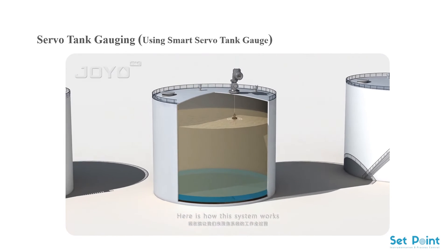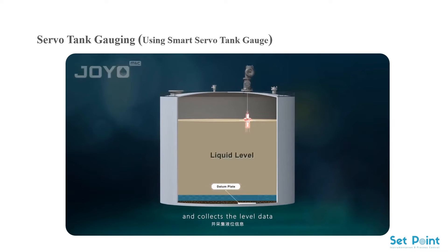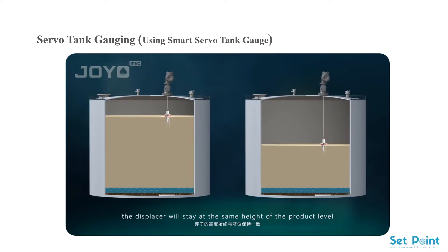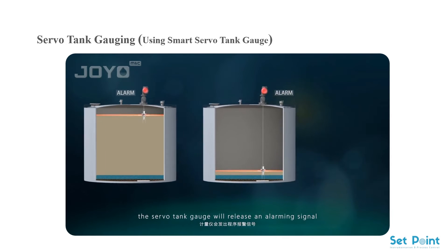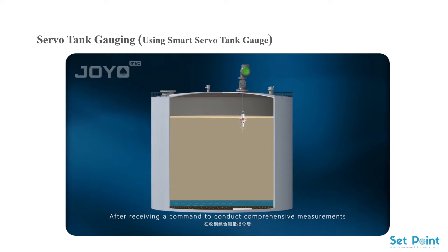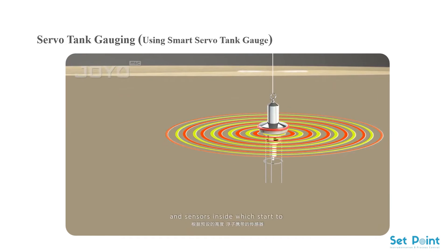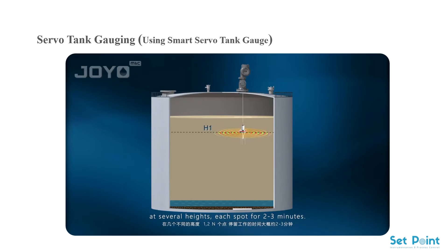Here is how the system works. Usually the displacer stays on the surface of the product and collects level data. When the product level goes up or down, the displacer stays at the same height as the product level. When the product level reaches its high or low limit, the servo tank gauge releases an alarm signal as preset by the program for safety purposes. After receiving a command to conduct comprehensive measurements, the displacer starts moving down, and sensors inside begin measuring the temperature and density of the product automatically at several heights, each spot for two to three minutes.